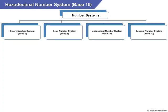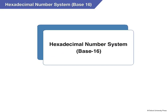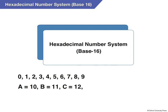Now let me tell you about the hexadecimal number system. It has 10 numeric digits: 0, 1, 2, 3, 4, 5, 6, 7, 8, 9, and 6 letters: A, B, C, D, E, F, where A equals 10, B equals 11, C equals 12, D equals 13, E equals 14, and F equals 15. That sounds interesting!